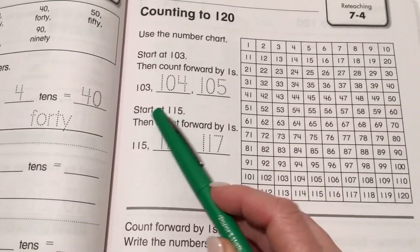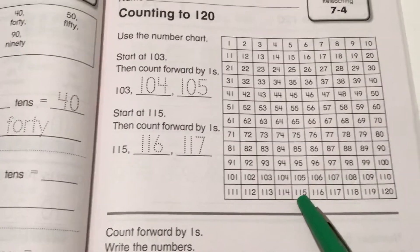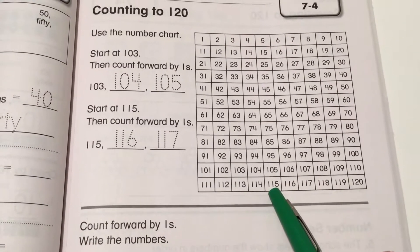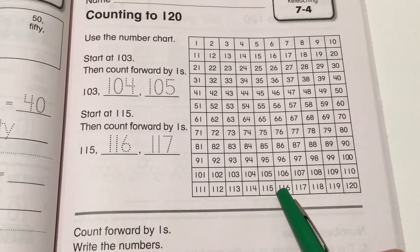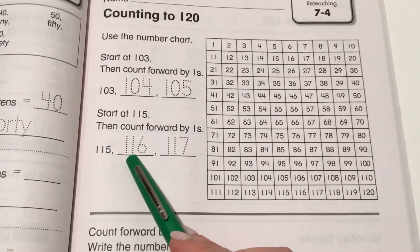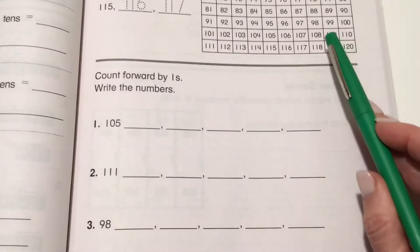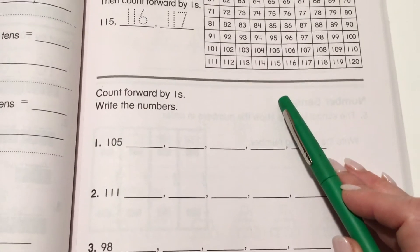Let's try another one. Start at 115. We locate it on the number chart and count forward by ones: 116, 117. There it is, 115, 116, 117. Keep going and try some of those on your own on this page and on the page behind it.